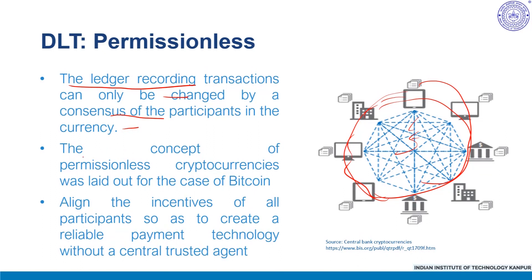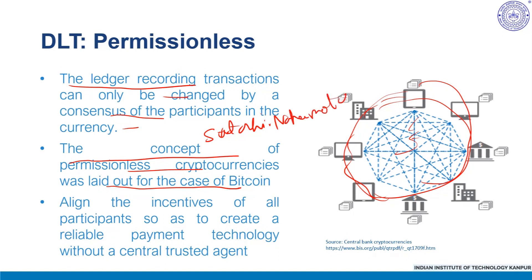The concept of permissionless cryptocurrencies started with Bitcoin — proposed in a white paper by an anonymous programmer or group of programmers under the pseudonym Satoshi Nakamoto. The currency Bitcoin runs on a specific type of distributed ledger called the blockchain. The blockchain is the distributed ledger that is updated in groups of transactions called blocks, which are then chained sequentially via cryptography to form the blockchain.